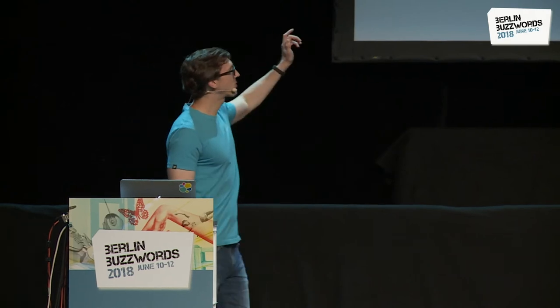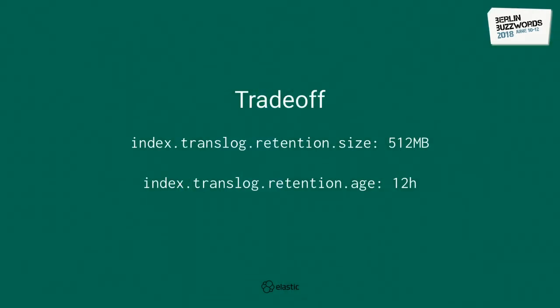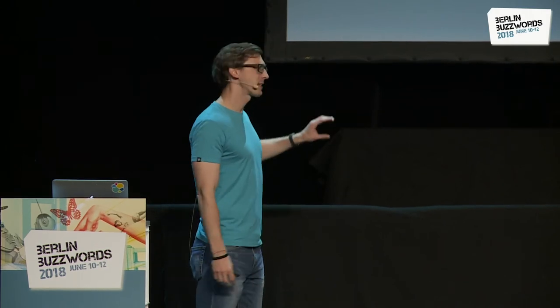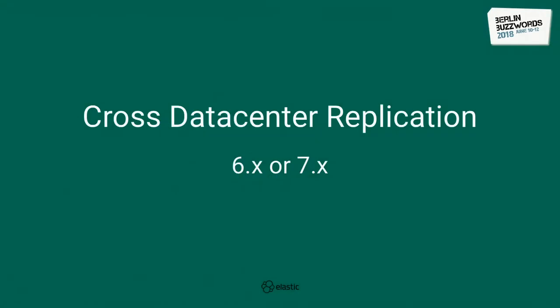There's one trade-off: we need to keep track of all these transactions. On a per-shard level, we keep up to half a gig of transactions or up to 12 hours — whichever hits first. So you need up to half a gig of additional disk space per shard. Keep track of that so you don't hit the flood stage watermark. This also enables future features like cross-data-center replication, where independent clusters in different regions can replay operations asynchronously. We're working on that — maybe in a later 6.x version or in 7.